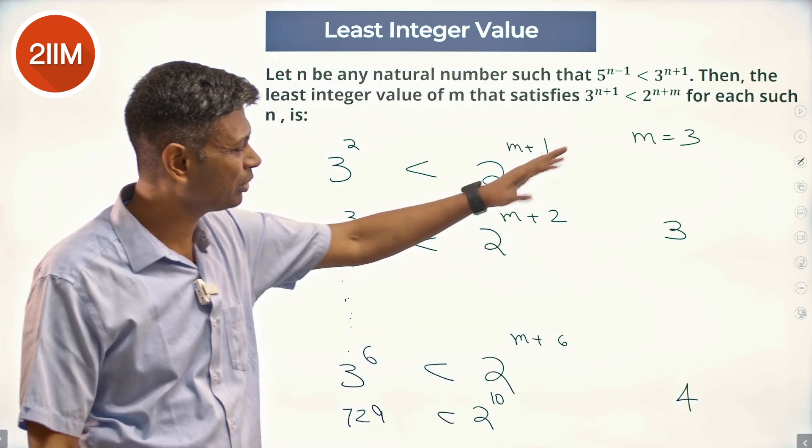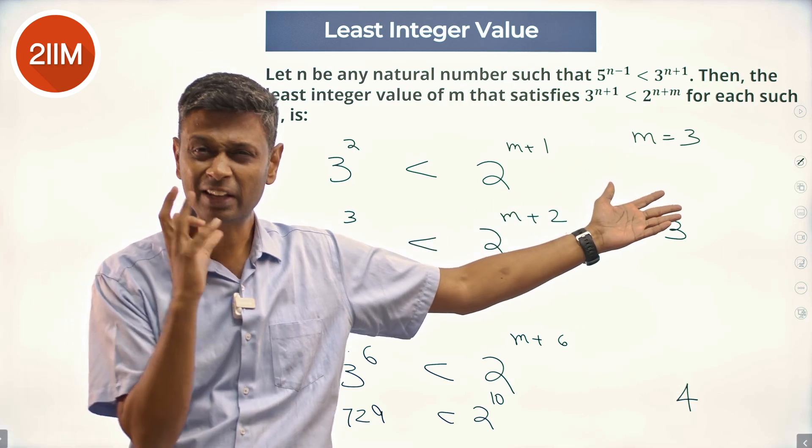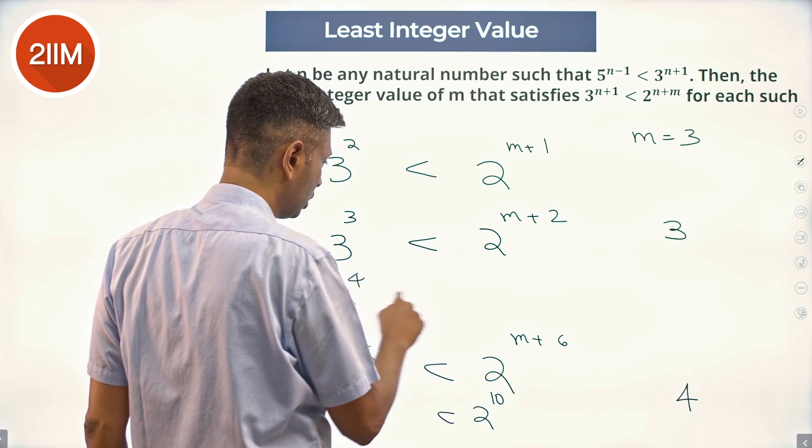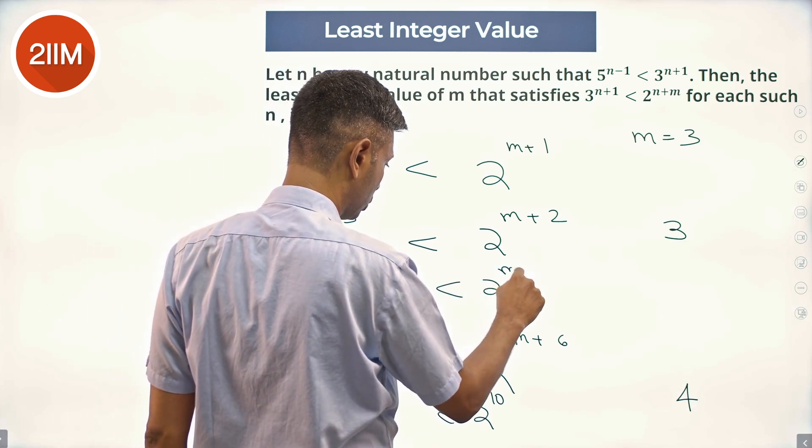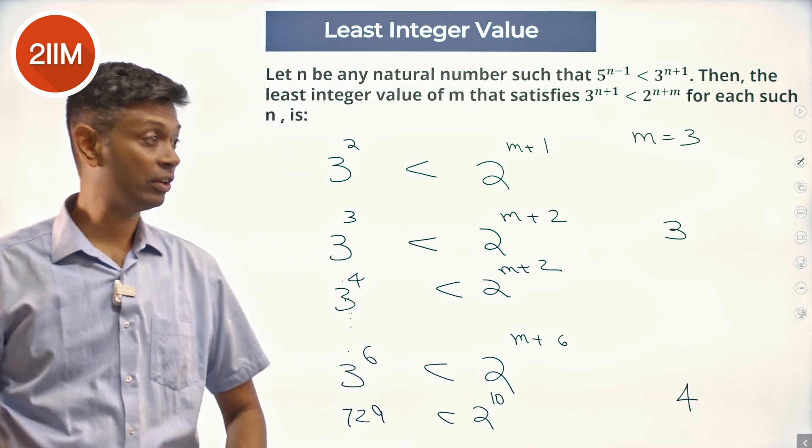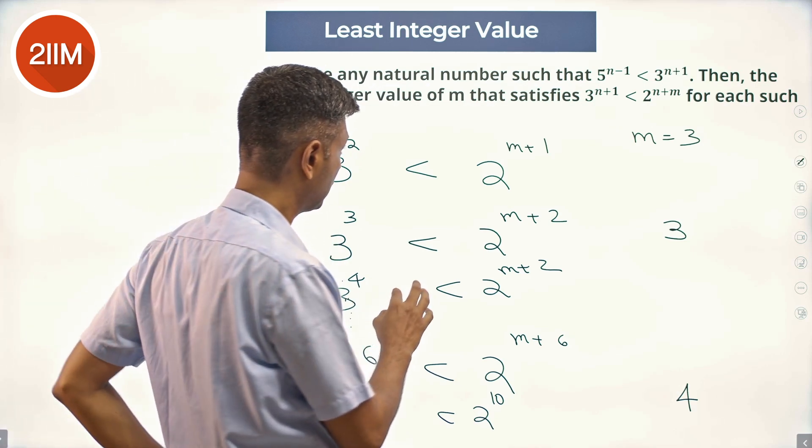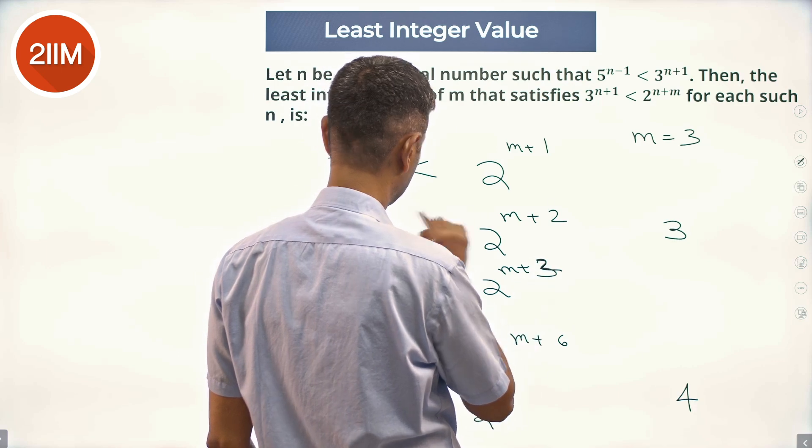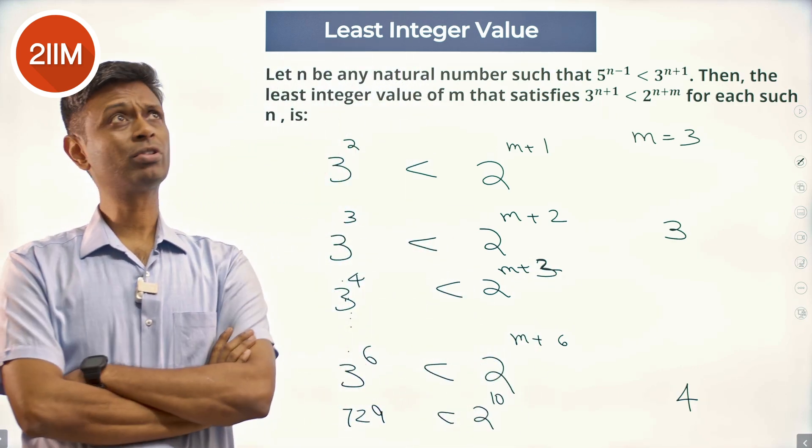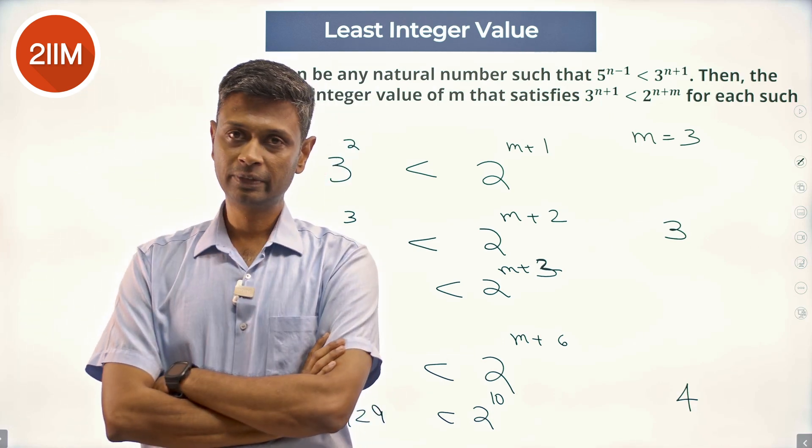Somewhere it goes from 3 to 4. It's 3 or 4. I can figure that out, I can estimate that, because I'm going to have 3^4 < 2^(m+4). 81. The next number is 128. 128 is 2^7, so m is 4.